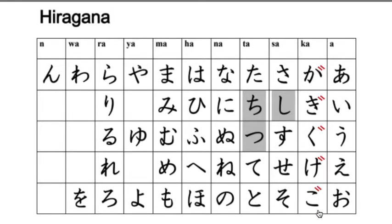Also the sa column — sa, shi, su, se, so — and the ta column — ta, chi, tsu, te, to — and there's only one other column: ha, hi, hu, he, ho can also take these ten-ten accents.